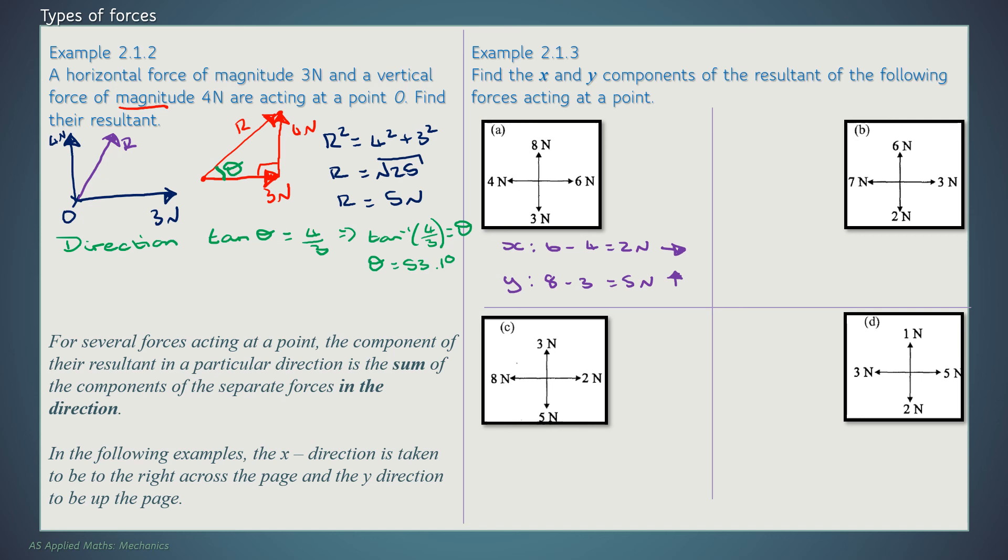I recommend that you pause the video now and work through B, C, D, and then just check in with your answers. So B, we've got X: 7 take 3 is equal to 4 Newtons. And that's going to be going to the left. And Y, we've got 6 minus 2 is also equal to 4 Newtons. And that one is going up. Make sure you've got those directions right. Because that is the key.